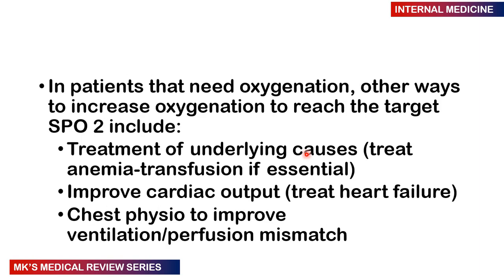Other ways to increase oxygenation to reach the target SpO2 may include treating the underlying cause — for example, transfusing a patient with anemia, or improving cardiac output in heart failure. If there is a ventilation-perfusion mismatch, chest physiotherapy can help. Mucolytics can be given if airways are blocked with mucus. These approaches may increase oxygenation without necessarily increasing the amount of supplemental oxygen given.